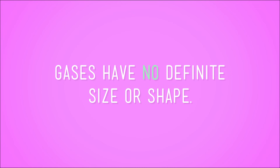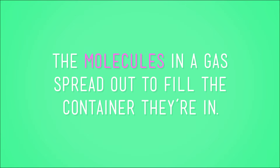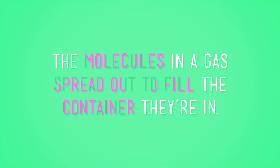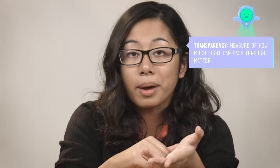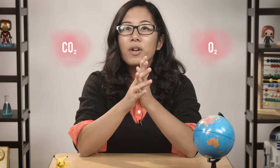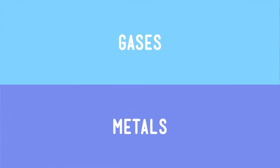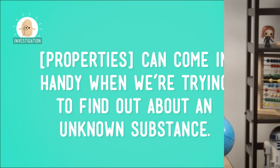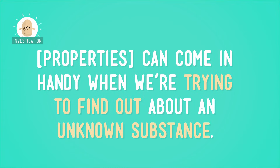What are some properties of gases? Thinking back to some of our first videos, we learned that gases have no definite size or shape — the molecules in a gas spread out to fill the container they're in. Gases are usually transparent too; light passes through them. Carbon dioxide and oxygen, for example, both fill up the space they're in and are transparent. Gases and metals are just two examples of groups of substances with specific properties, and those properties come in handy when we're trying to find out about an unknown substance.